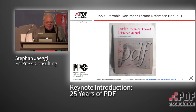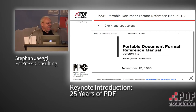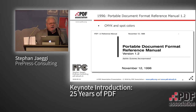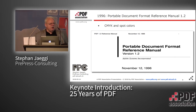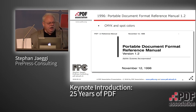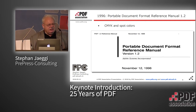The problem with PDF at the beginning was that it was not meant for print production — it was meant for office use. So if you had CMYK color in your PostScript file, everything was still converted to RGB, making it useless for print production except for black and white pages. That changed with PDF 1.2 in 1996, where CMYK and spot colors were possible, but that was still not enough for us.